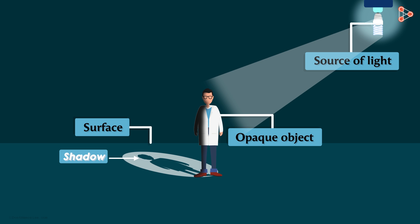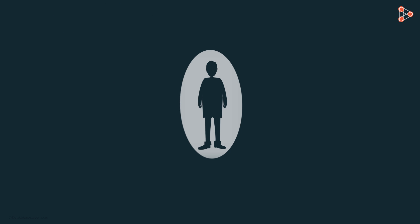What's so special about shadows? Shadows also give us some information about the object. So if I show you this shadow, you will be able to tell me that it's a human body's shadow.